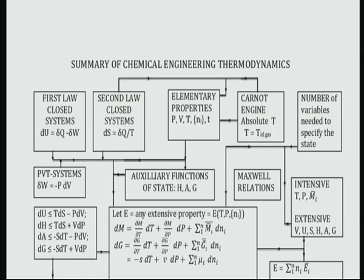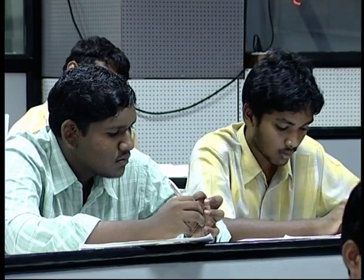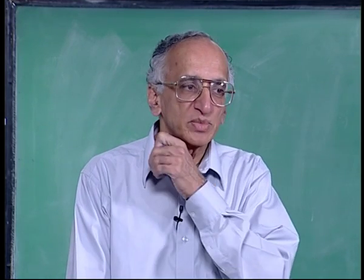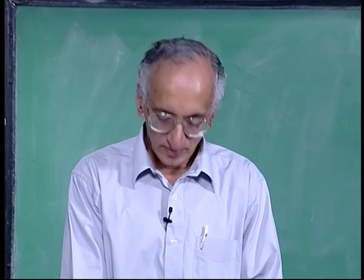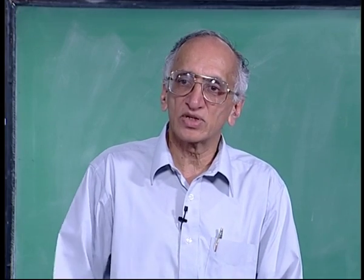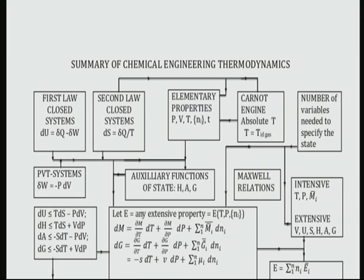Then there are elementary properties like PVT. T ideal gas that came from Gay-Lussac's measurements. You know you take the volume and you produce an absolute temperature and that absolute temperature for an ideal gas at which the volume is 0 is minus 273 degrees C. So that is an empirical information number of moles.